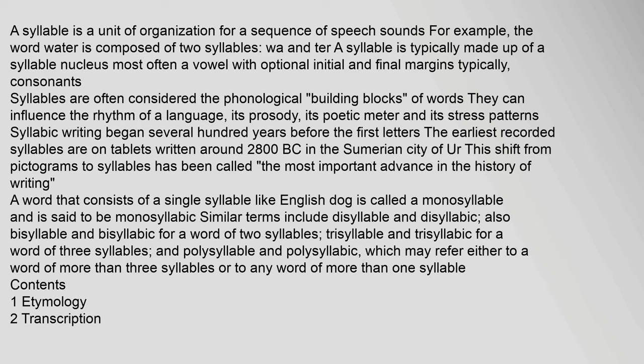A word that consists of a single syllable, like English 'dog,' is called a monosyllable and is said to be monosyllabic. Similar terms include disyllable and disyllabic for a word of two syllables, trisyllable and trisyllabic for a word of three syllables, and polysyllable and polysyllabic, which may refer either to a word of more than three syllables or to any word of more than one syllable.